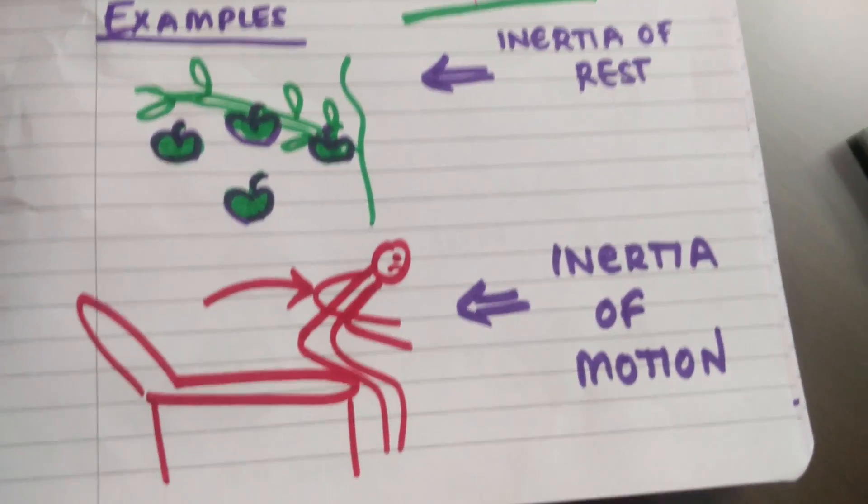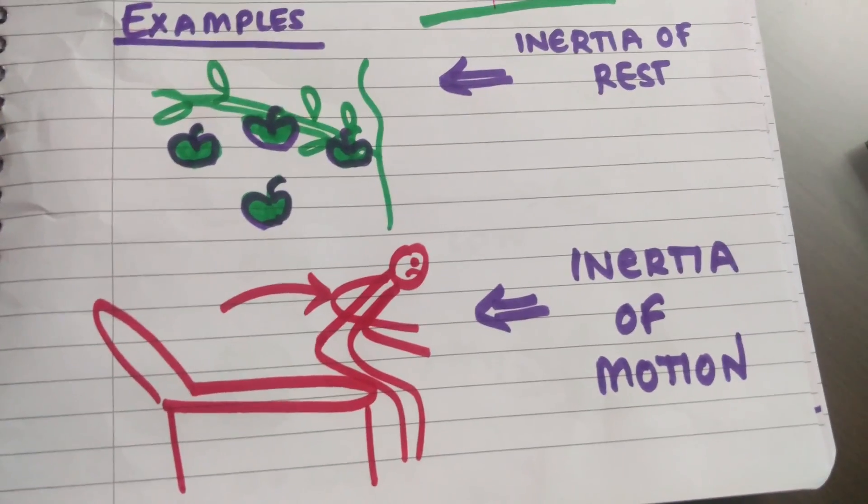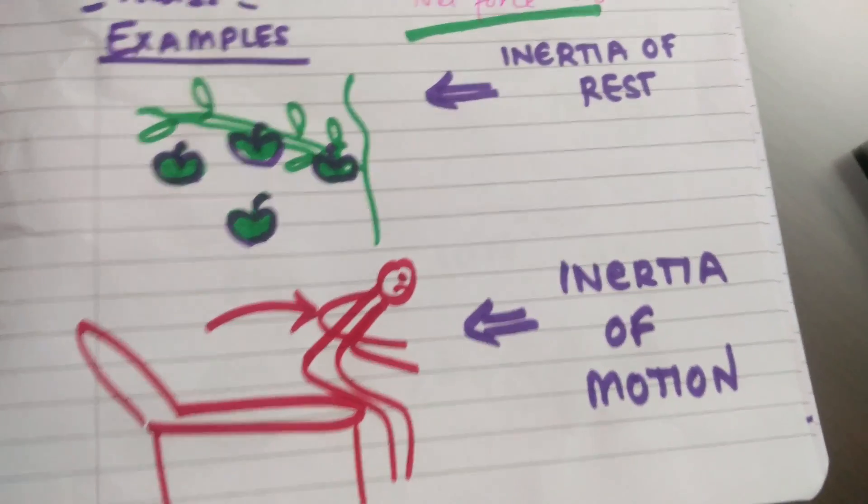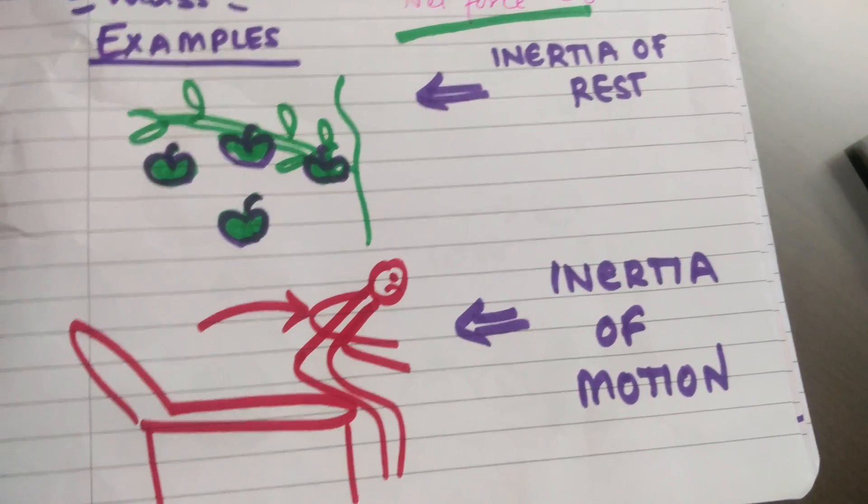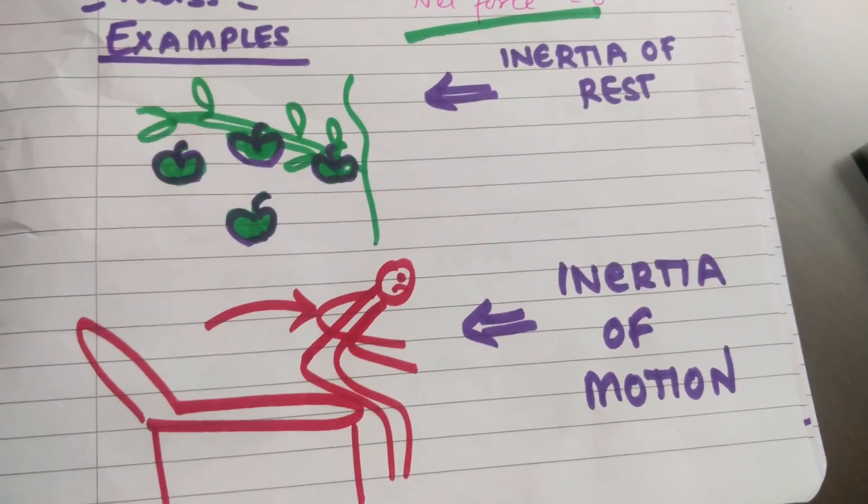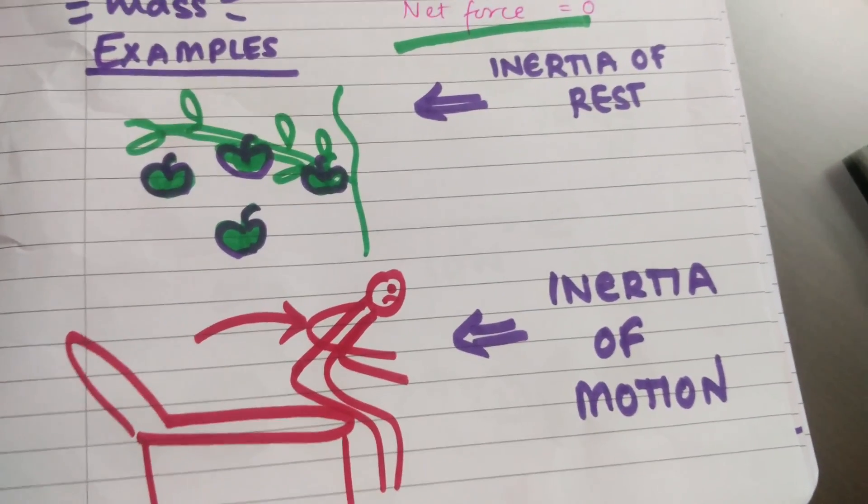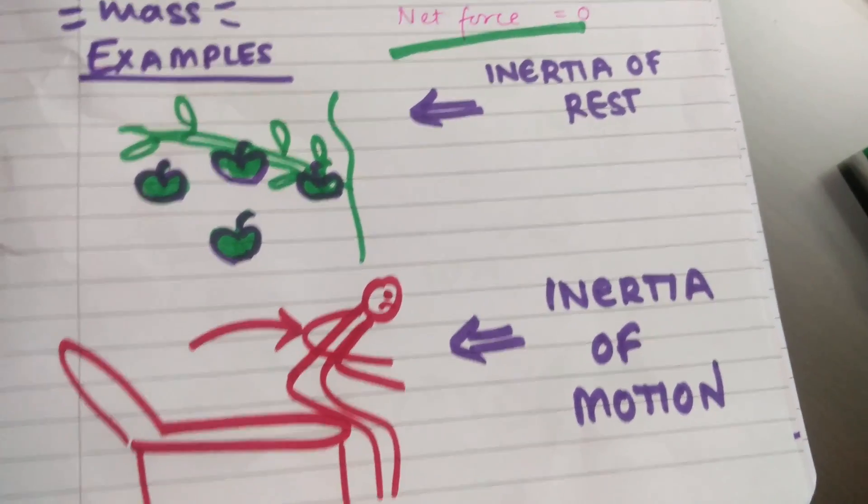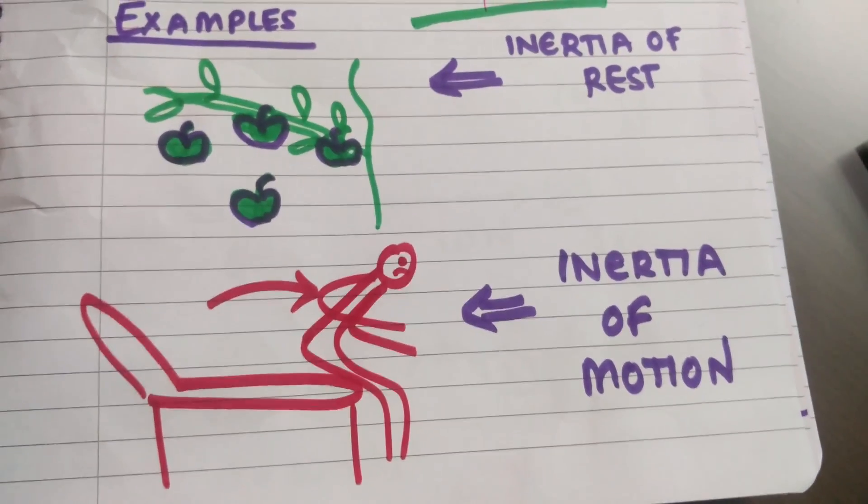When the car suddenly stops, our lower body, which is in contact with the floor of the car, comes to rest immediately. But our upper body tends to continue to move in the same direction with the same speed, which is in the forward direction. That's why we fall forward when a car suddenly brakes.